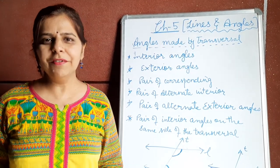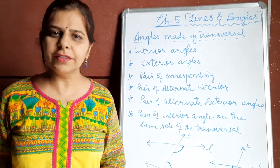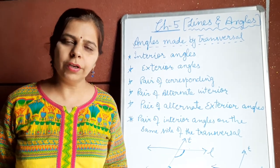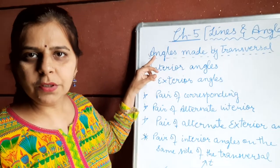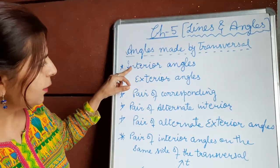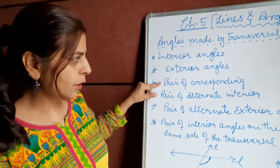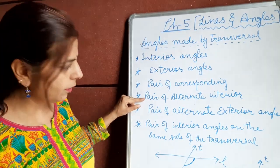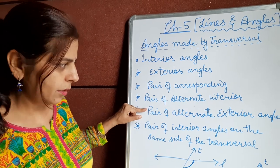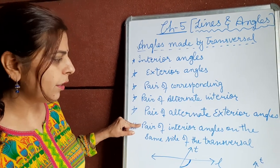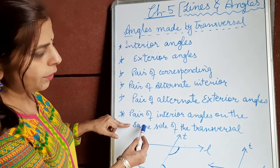Hello everyone. In the previous video I gave you an introduction of this chapter, and now I am continuing the same topic — angles made by a transversal. Last time I explained interior angles, exterior angles, pair of corresponding angles, pair of alternate interior angles, alternate exterior angles, and pair of interior angles on the same side of the transversal.